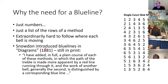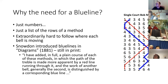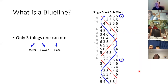In 1881, a certain author introduced the concept of a blue line in his book 'Diagrams'. In the companion text he wrote: 'I've added in full the playing course of each of the methods in which the path of the treble is made more apparent by a red line running through it, and the work of another bell, generally the second, is distinguished by a corresponding blue line.' So this is the first reference to a blue line — they've been around for a while. By drawing a line through the rows it makes a clear pattern, and that's what the blue line is.